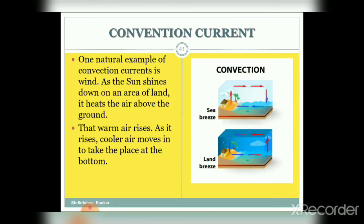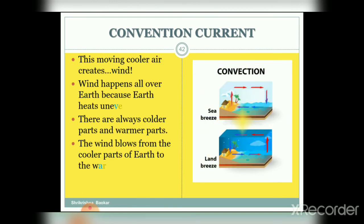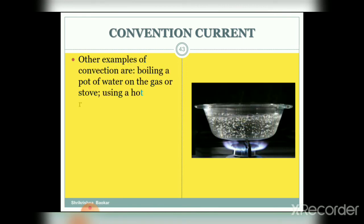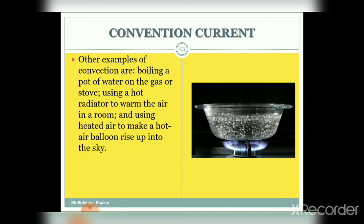One natural example of a convection current is wind. As the sun shines down on an area of land, it heats the air above the ground. That warm air rises, and as it rises, cooler air moves in to take its place at the bottom. This moving cooler air creates wind. Wind happens all over Earth because Earth heats unevenly — there are always cooler and warmer parts, and wind blows from the cooler parts to the warmer parts. Other examples of convection include boiling a pot of water, using a hot radiator to warm air in a room, and using heated air to make a hot air balloon rise into the sky.